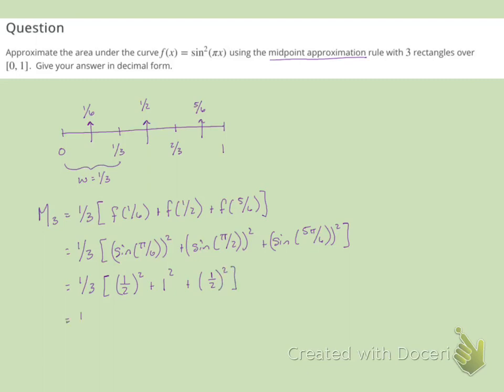So this gives us 1/4 plus 1 plus 1/4, and 1/4 plus 1/4 is 1/2, so we have 1 and 1/2.